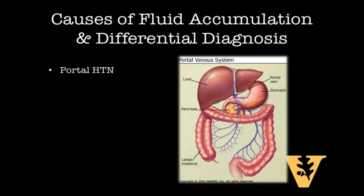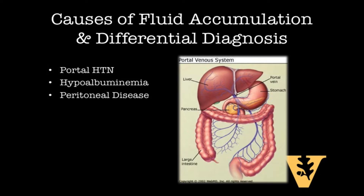Cirrhosis can also cause a low albumin state, and hypoalbuminemia, separate from liver fibrosis, can also lead to the accumulation of ascites. These include nephrotic syndromes, protein-losing enteropathies, and general malnutrition. Peritoneal diseases which impair the normal efflux of fluid from the abdomen can also cause accumulation, such as malignancies, infections, or eosinophilic gastroenteritis.